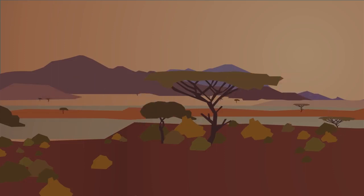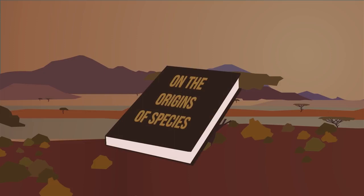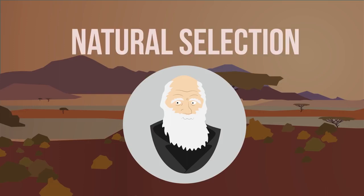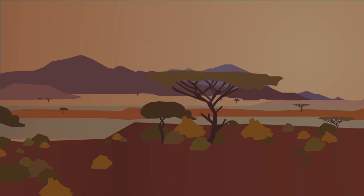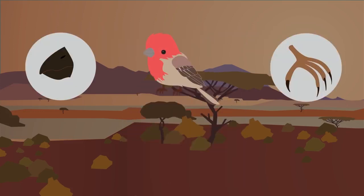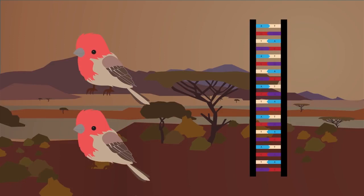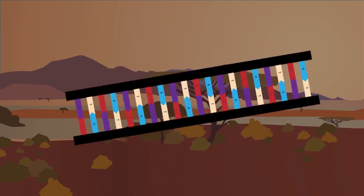After it was published, On the Origin of Species caused a storm of controversy and Charles Darwin was ridiculed. But his theory of natural selection is now widely accepted. During the 20th century, we discovered that the characteristics of an organism that are passed from one generation to the next are controlled by genes. Scientists were able to explain Darwin's theory of natural selection in terms of the selection of favorable genes.